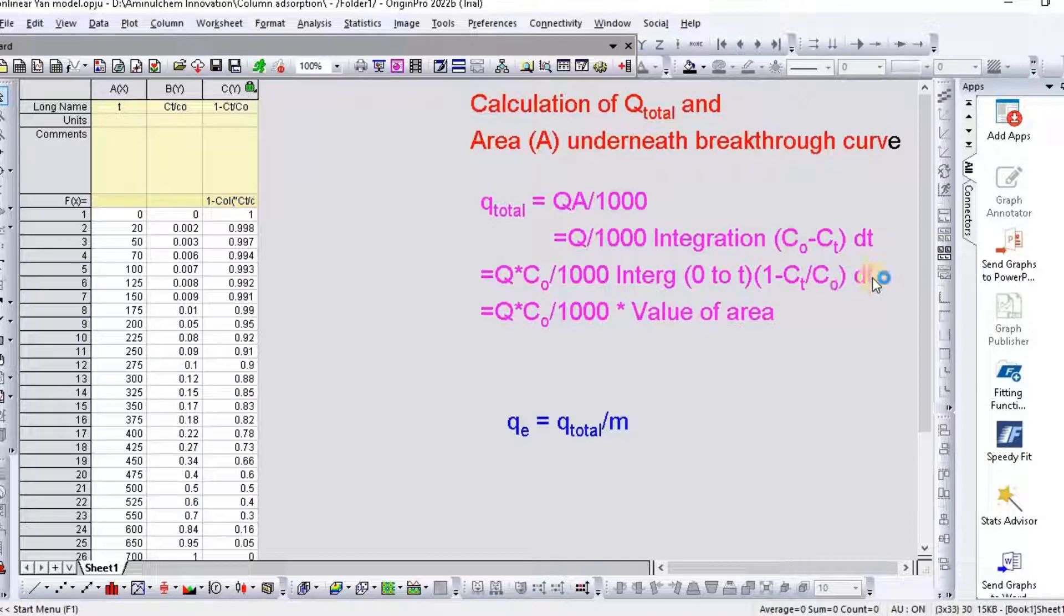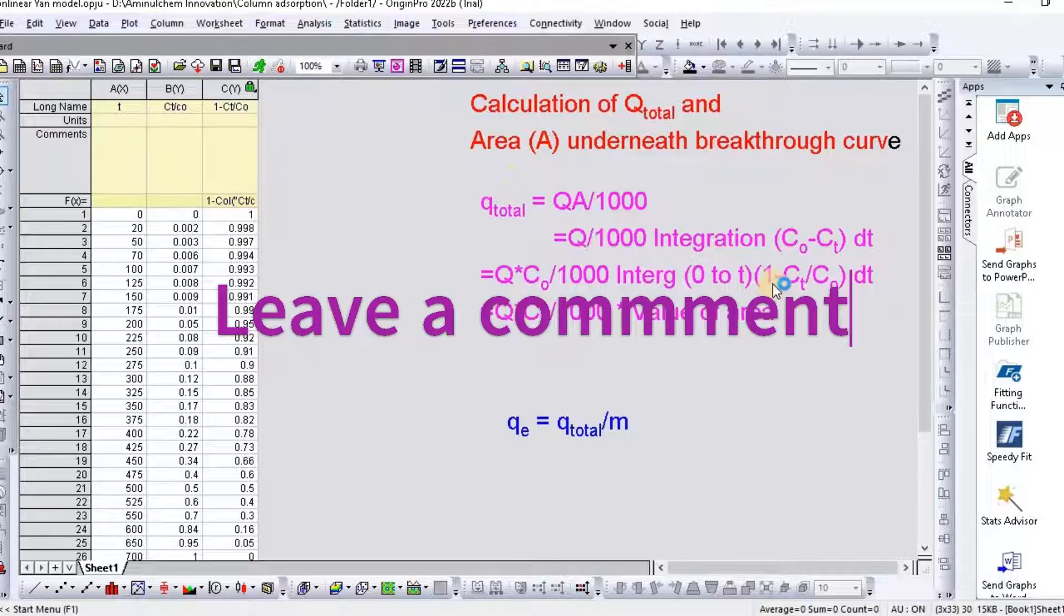So in order to calculate area A, you need to first convert 1 minus Ct divided by C0.